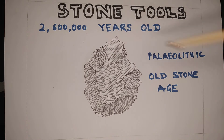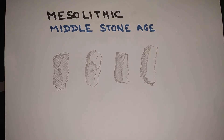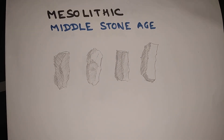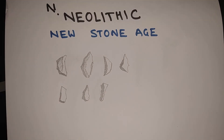The tools of the Old Stone Age were large in size and crude. The tools of the Middle Stone Age were smaller and more refined compared to the Paleolithic period. Tools of the Neolithic Age were much smaller and more refined than the tools of earlier periods.